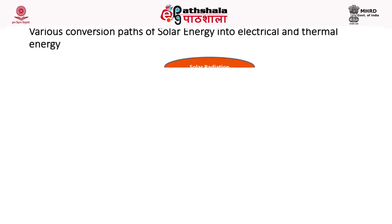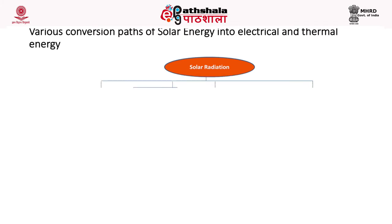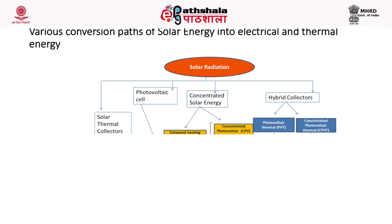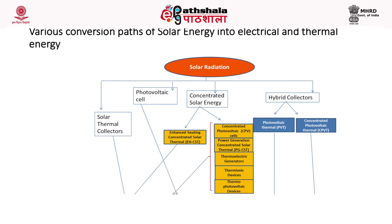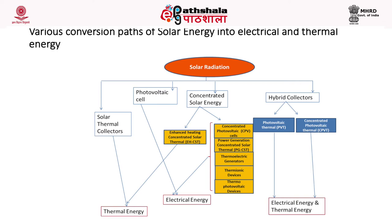This flow diagram shows the various conversion paths of solar energy into electrical and thermal energy. Solar radiation is directly used by solar thermal collectors for thermal energy production. Photovoltaic cells convert it to electrical energy, and concentrated solar systems produce both thermal and electrical energies. There are also hybrid collectors — photovoltaic thermal and concentrated photovoltaic thermal — which can produce both electrical and thermal energies.